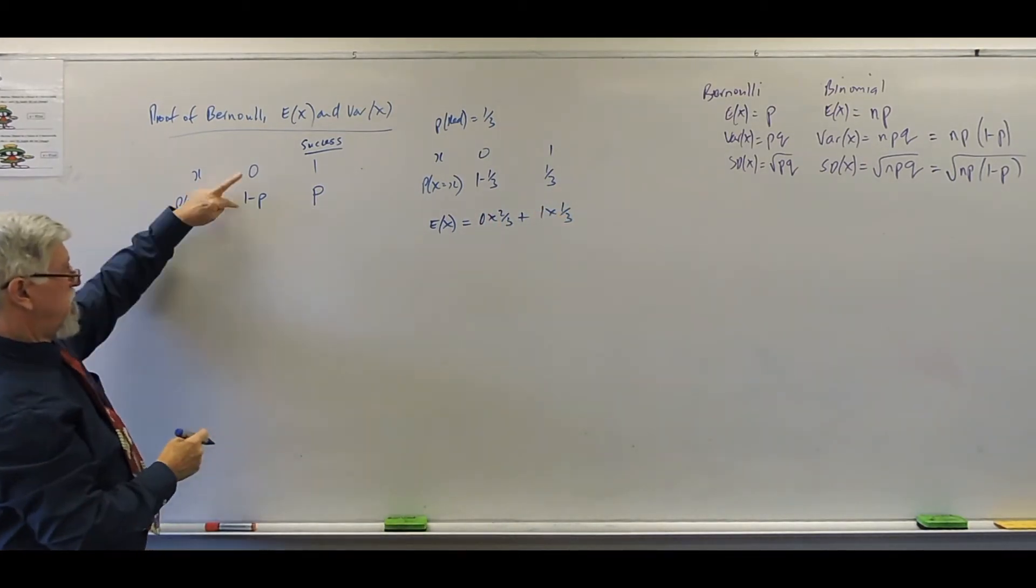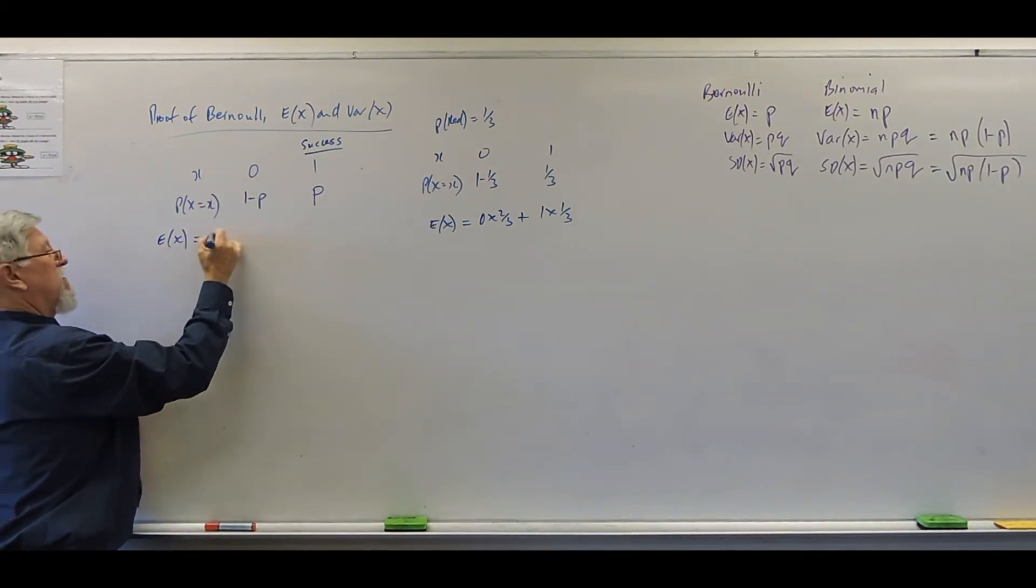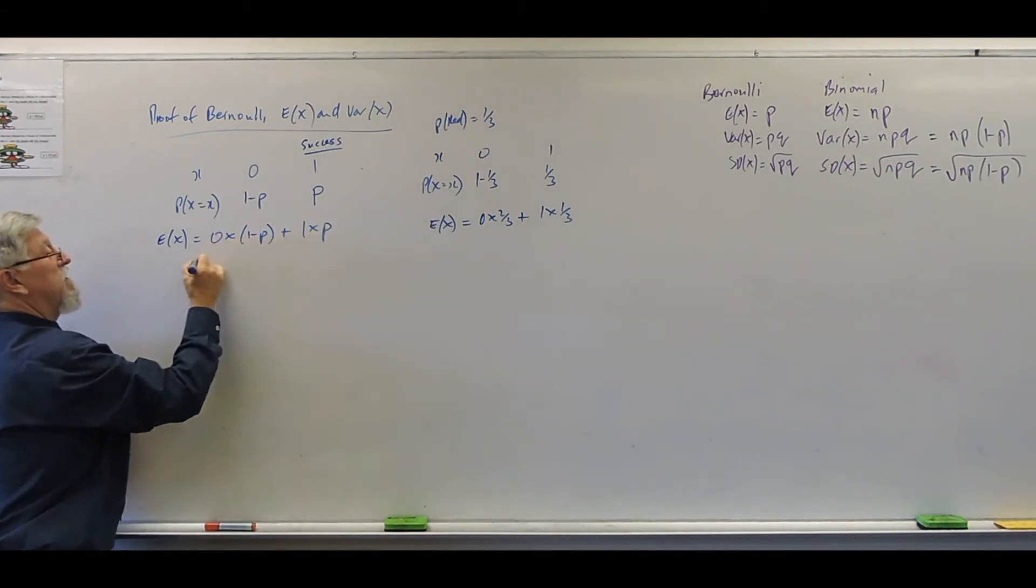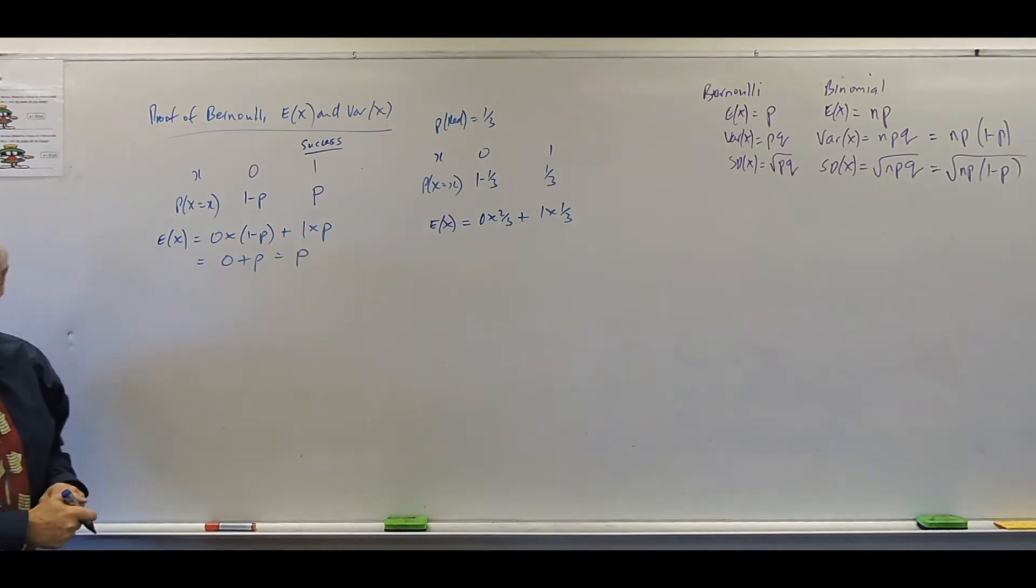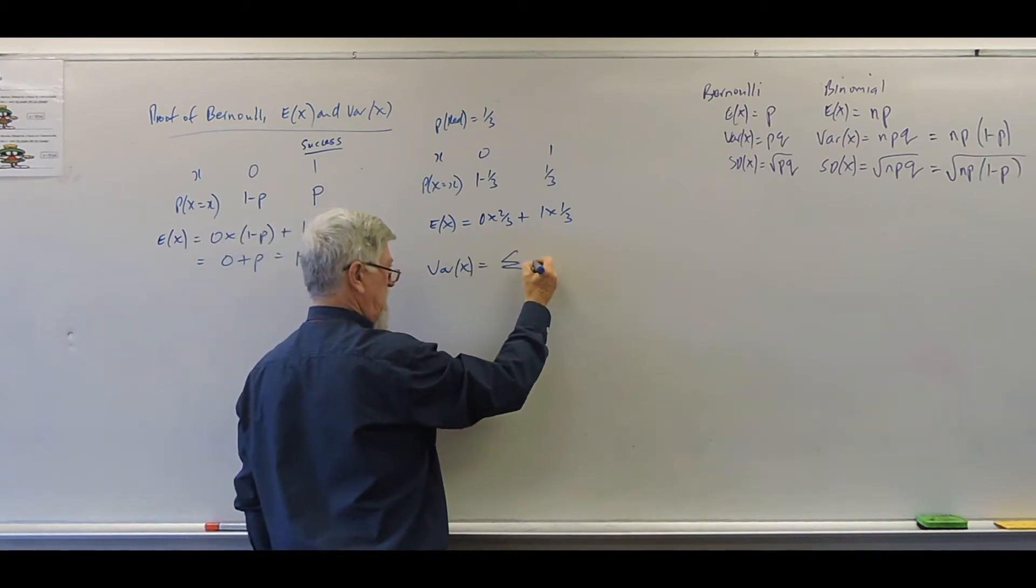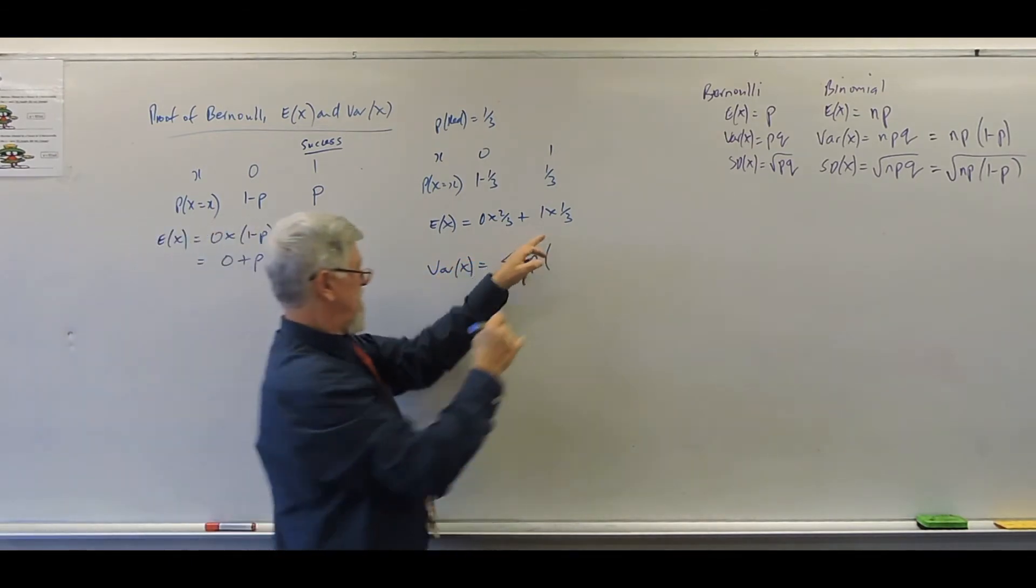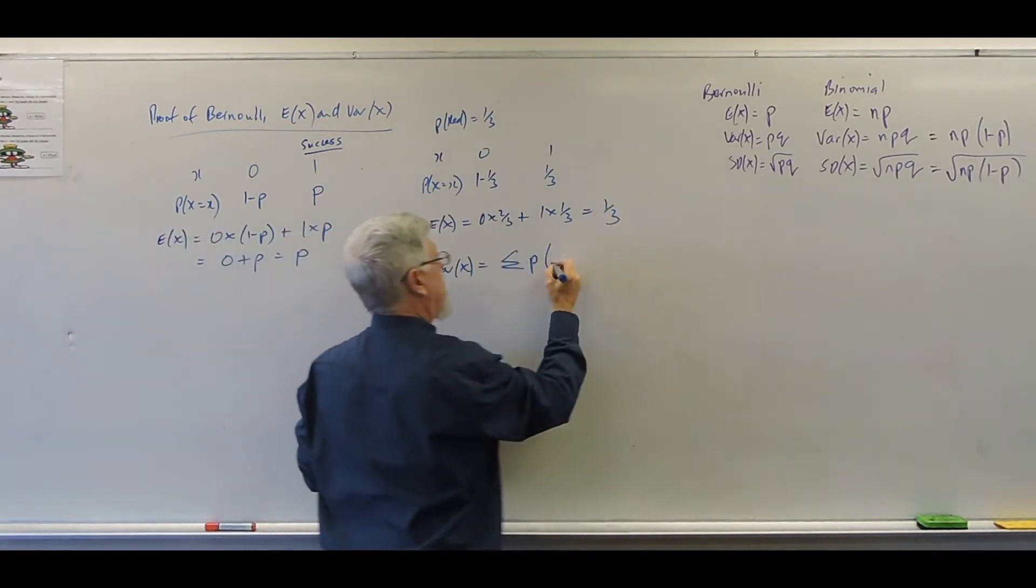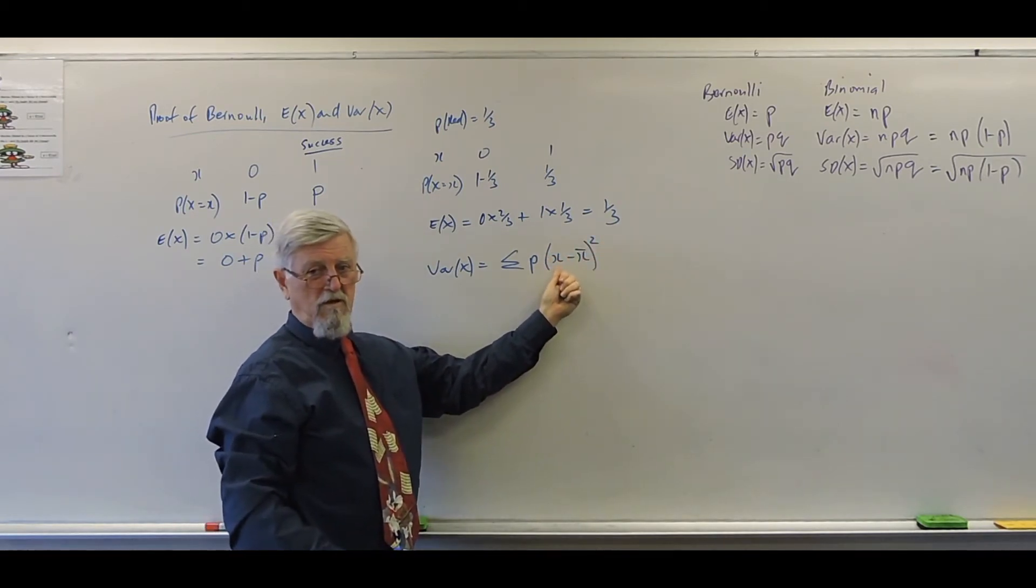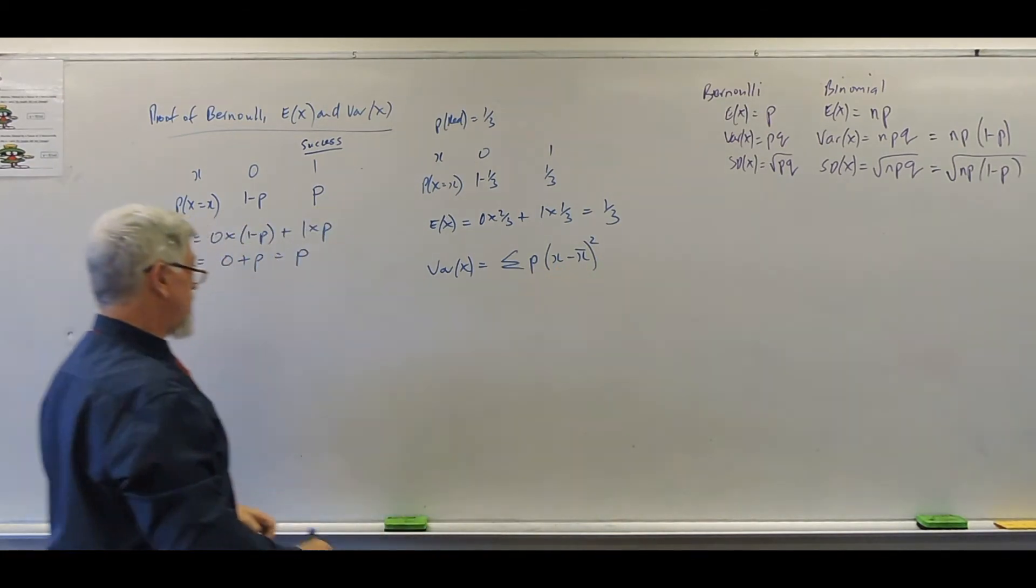So, that's 0 times 2 thirds plus 1 times 1 third. Repeat the process. And it doesn't matter which way I do it because you square it, so it doesn't matter at all. I'm watching your eyeballs go.